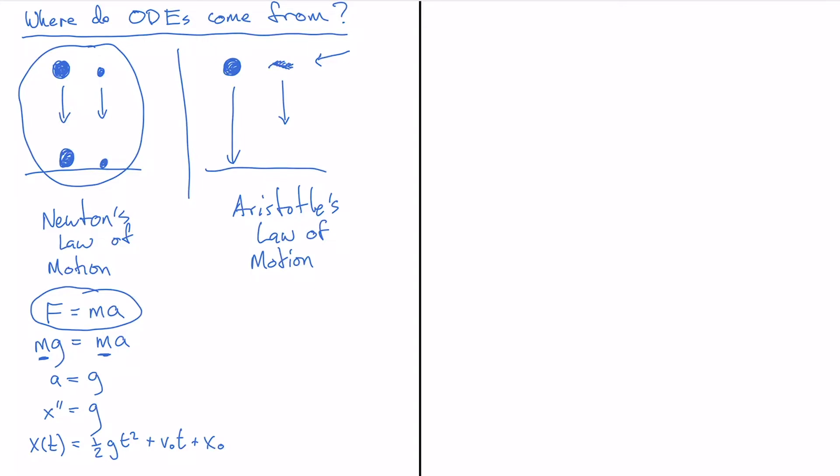So Aristotle's law of motion. Aristotle observed that the velocity was proportional to the weight of an object. And that weight we know is given by the mass times the gravitational constant at the surface of the Earth. And so what that means is we have x prime, that's the velocity, is equal to,